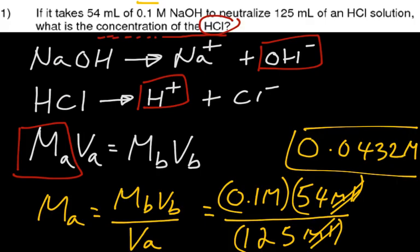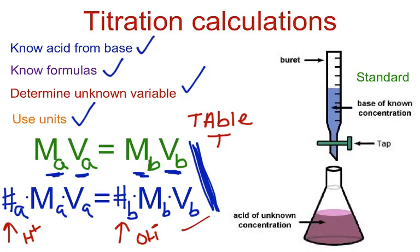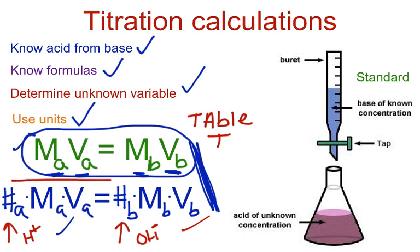This is once again a short video on titration problems. We did an example using both of these equations right here. If you have a one-to-one ratio, you use this equation, which is on your reference table. If you don't have a one-to-one ratio of OH- to H+, you use this equation right here, modified with the number signs.